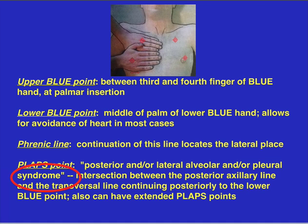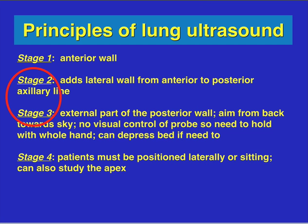In the ICU, sometimes it's difficult to get the posterior aspect of the patient if they're supine, if they've had surgeries and wounds, or if they're obese. So most of the time you will actually see a fairly good lung on the axillary aspect, similar to where you're looking for pleural effusions. We're addressing stage two and stage three parts of the lung exam — the lateral wall and then the external part of the posterior wall.